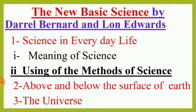Now let's know about the book 'The New Basic Science' written by Daryl Bernard and Lon Edwards. This book has three chapters. The first chapter is 'Science in Everyday Life,' which has two parts: 'Meaning of Science' and 'Using the Methods of Science.' Our current essay, 'Using the Scientific Method,' is based on the second part of this first chapter.